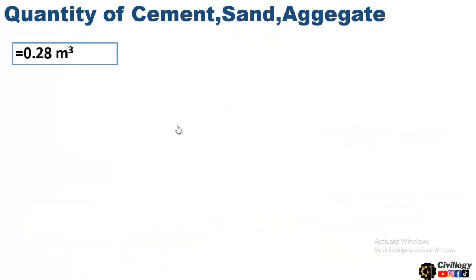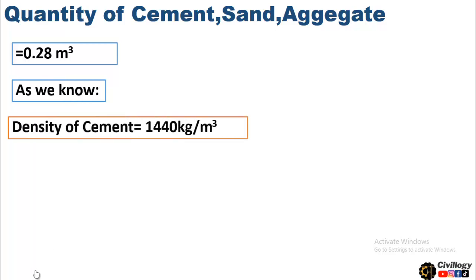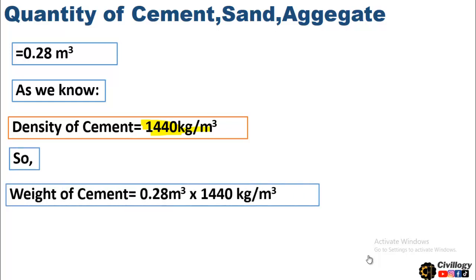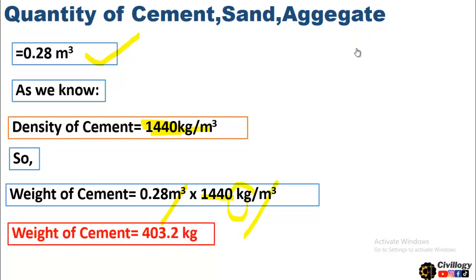As we calculated, the total volume of cement is 0.28 cubic meters. To convert volume to weight, we must know the density of cement, which is 1440 kg per cubic meter. To get the weight, we will multiply this volume with the density — the cubic meters cancel out and we are left with kg. The weight of cement is 403.2 kg for this mix design.